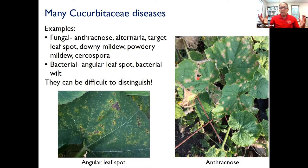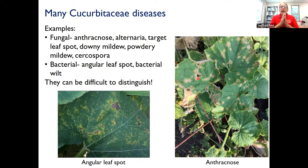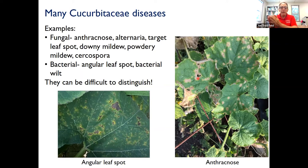My point with this slide is to say: if you're growing anything in the cucumber family, you're probably going to see at least one disease, if not more. In wet, humid, warm weather, the diseases will progress and may kill the plants or debilitate them before they even start producing very well.